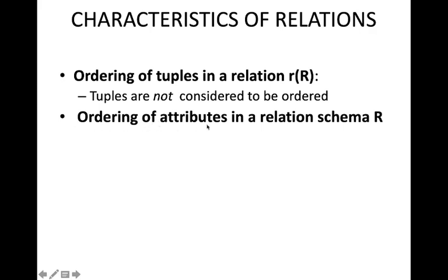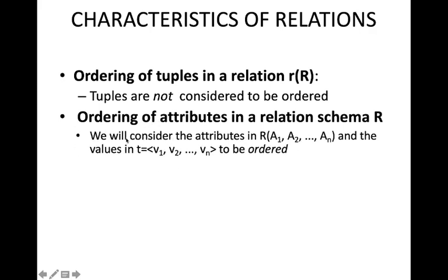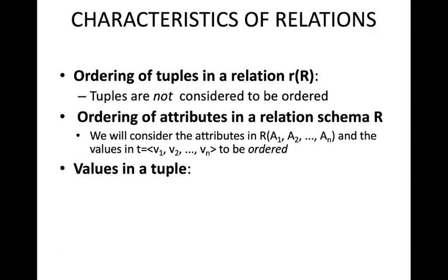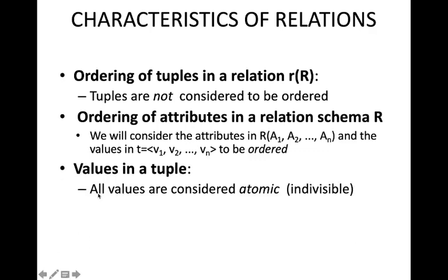Regarding ordering of attributes in a relation schema R: attributes and the values in tuples are considered to be ordered. If we take a relation schema, each row should be ordered so that A1 has value v1, A2 has value v2, and so on up to An having value vn. Ordering of attributes is considered to be maintained.